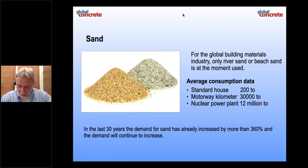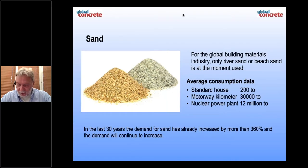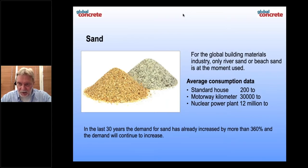To give an idea about the consumption of projects or construction: a standard house in Europe needs about 200 tons of sand. A motorway per kilometer needs 30,000 tons of sand and a nuclear power plant 12 million tons. It's a huge amount. In the last 30 years, the demand for sand has really increased by 360% and the demand will continue to increase.